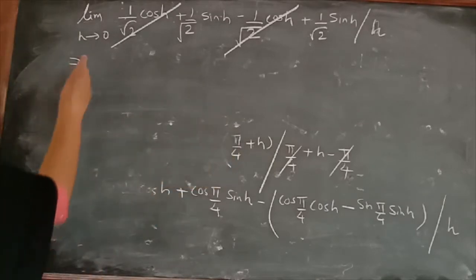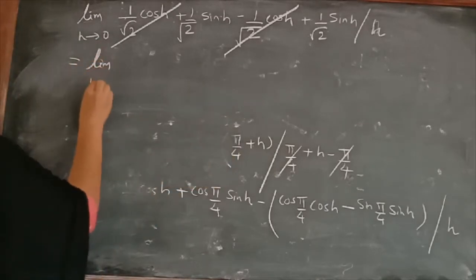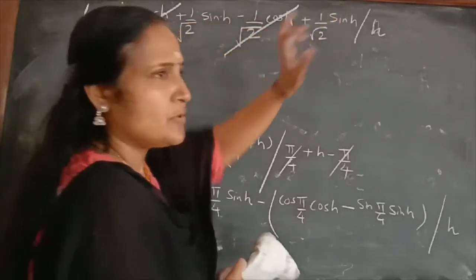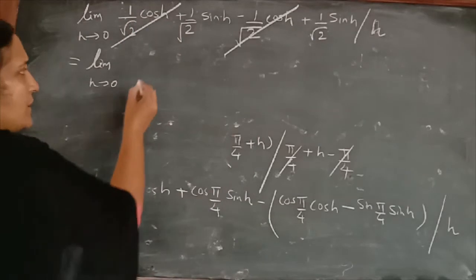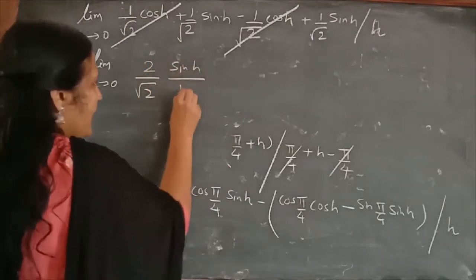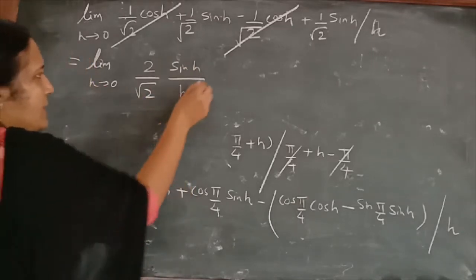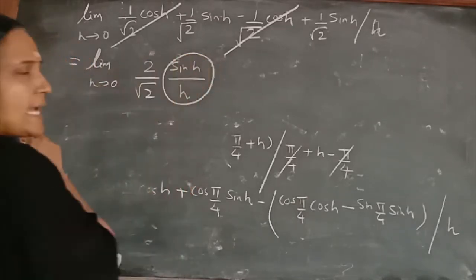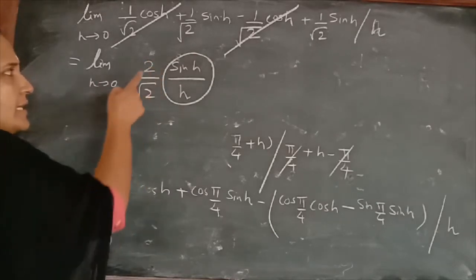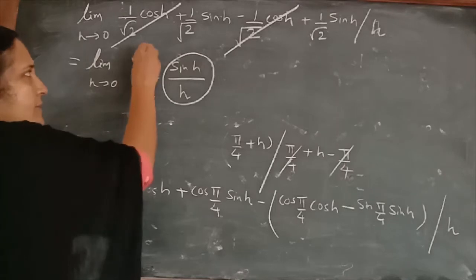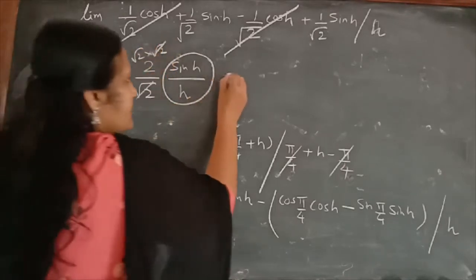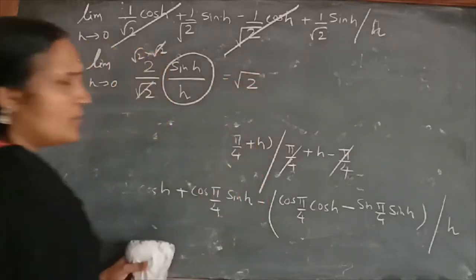After cancellation, remaining is: limit h tends to 0 of (1/√2·sin h + 1/√2·sin h) / h = (2/√2)·(sin h / h). Since limit h→0 of sin h/h = 1, and 2/√2 = √2·√2/√2 = √2. The answer is √2.